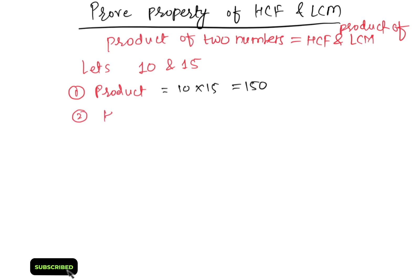Then second I'll find out HCF of 10 and 15. If you see there HCF is 5. 5 is a common factor.